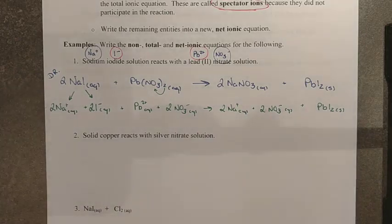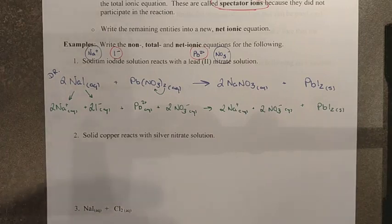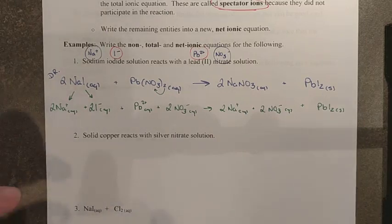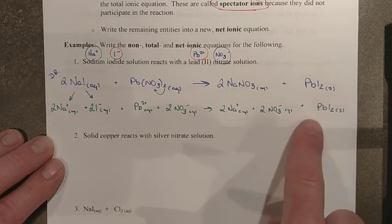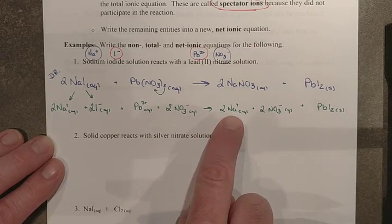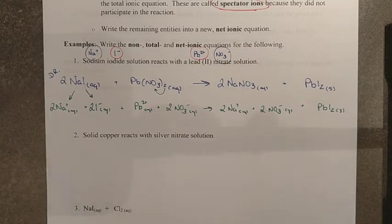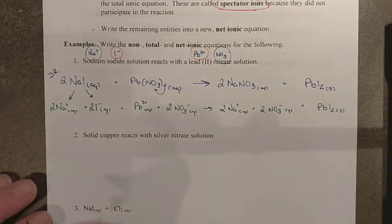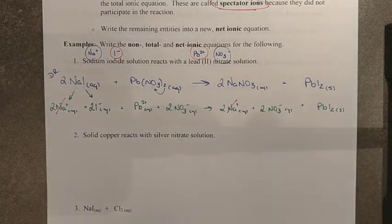And now the last thing we need to do here is go through this equation and look for things that did not change in number, charge, or state. So I look on this side, I've got two sodium ions. I have two sodium ions. Same state, same charge, same amount. This means that sodium didn't participate in the reaction. It was unchanged by the chemical reaction. And so what we do is we would just cancel out the ones that did not participate or were not changed by the reaction.